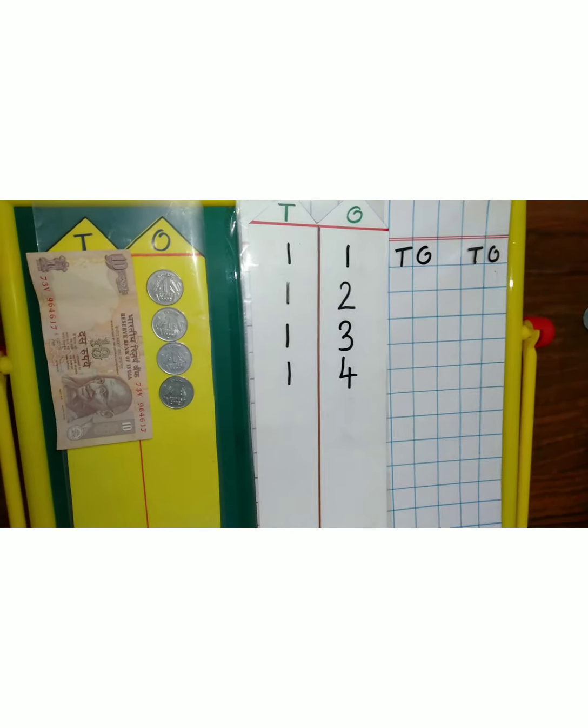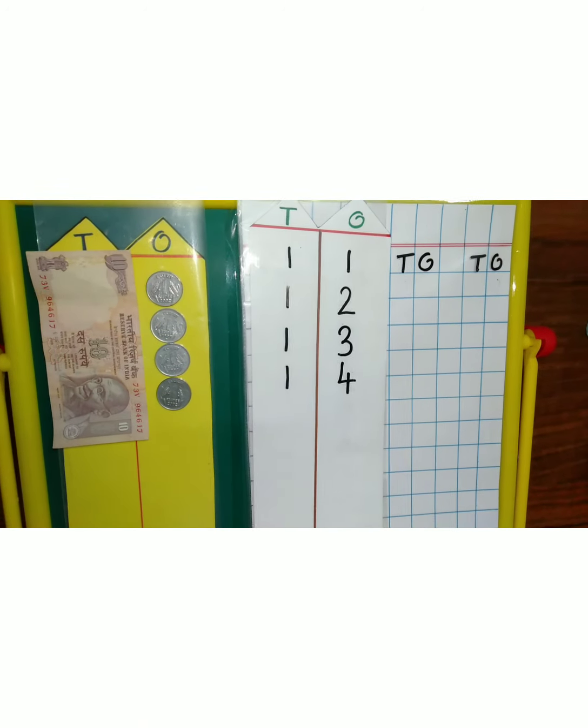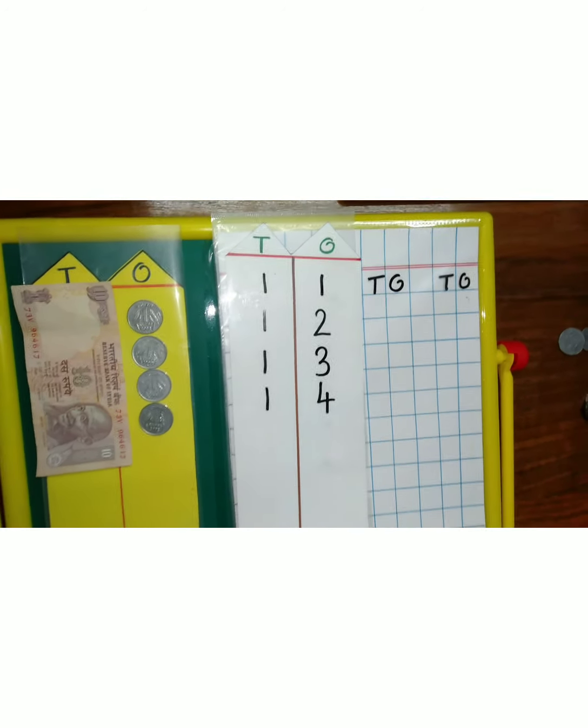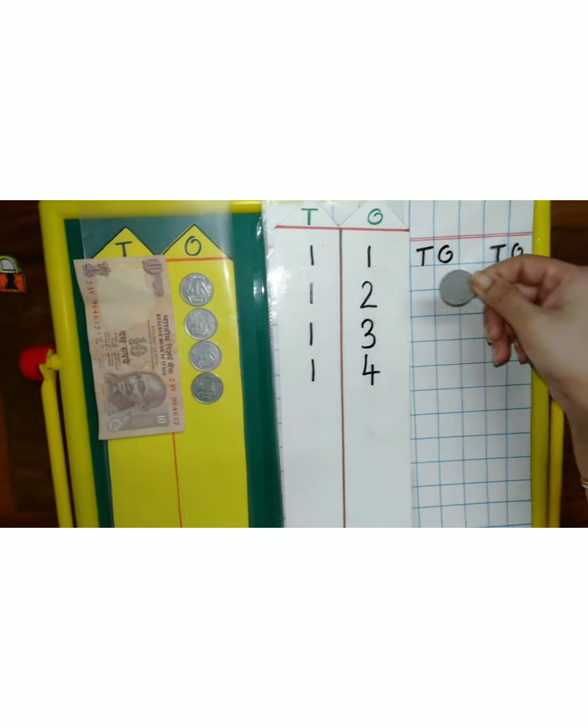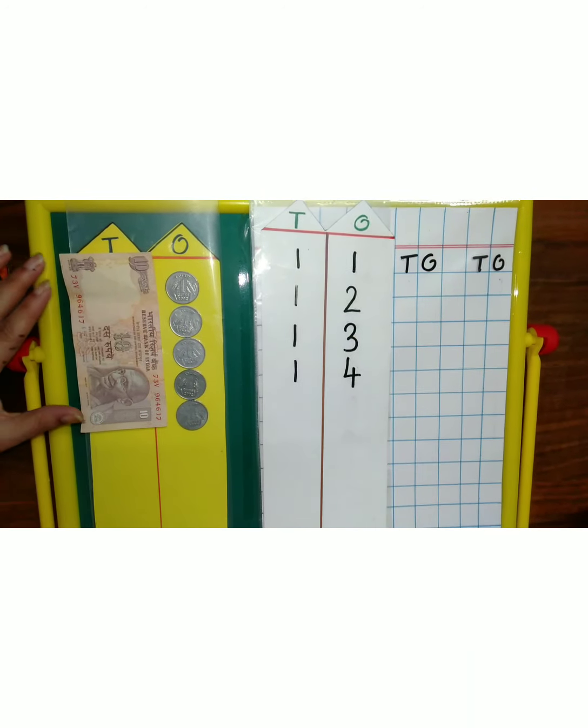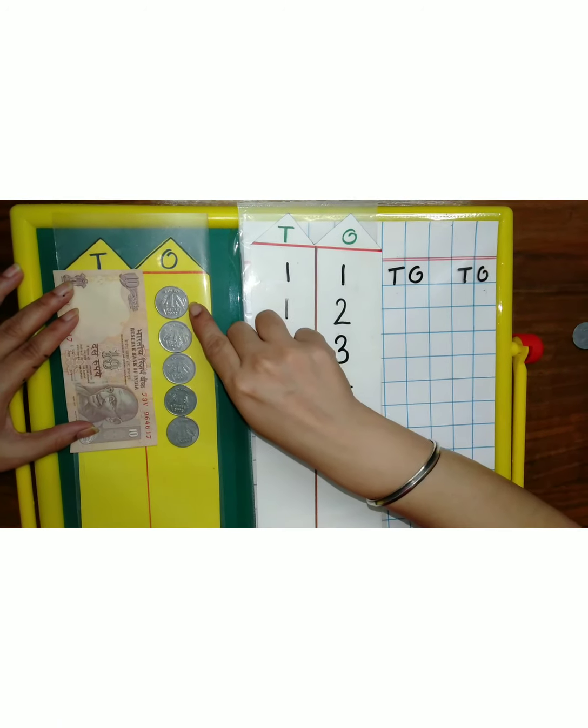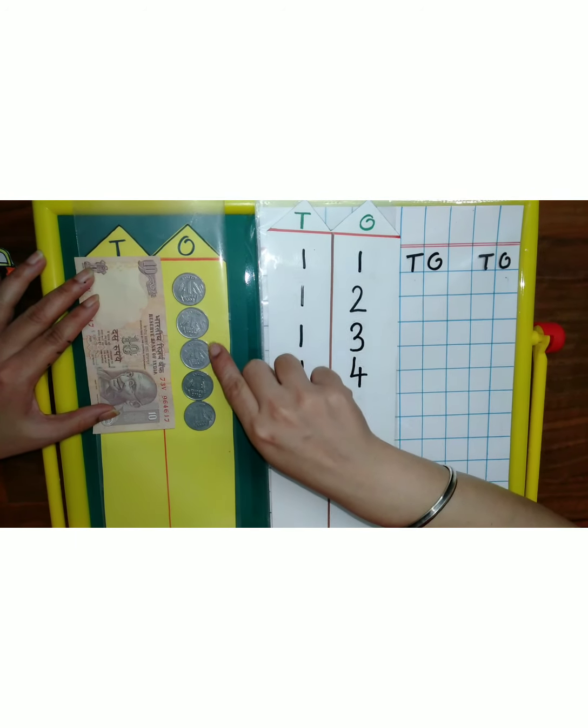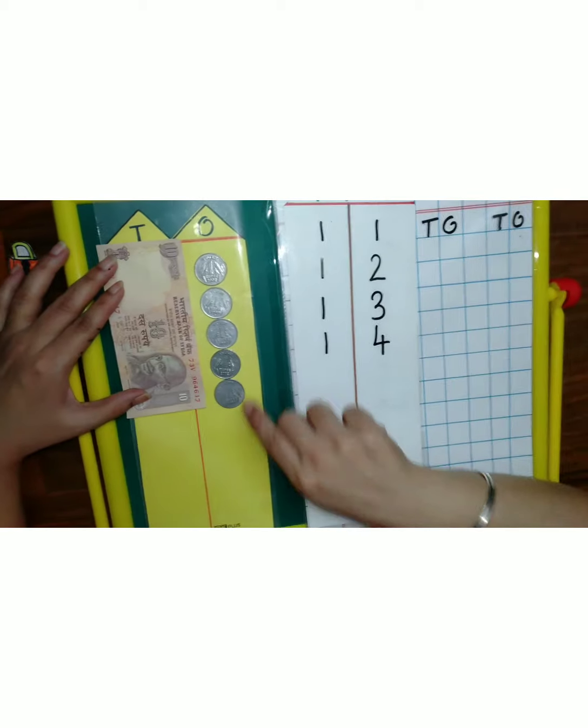Well done. Now fourteen is saying, oh I want my friend. He is waiting outside. Please call him. So one more extra friend comes and joins in one's house. So let's count again children. How many we are now? One, two, three, four, five.